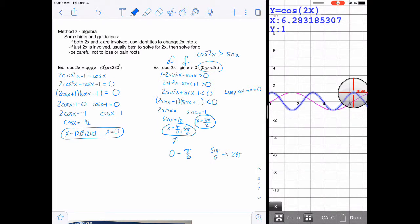So from 5 pi over 6 all the way up to 2 pi, then the cosine is greater. So the way that we should write that is to sandwich x in between the 0 and the pi over 6, and then sandwich our x in between 5 pi over 6 to the end. It does include the 2 pi. So this is the final answer that we're looking for because that is where the cosine of 2x is greater than the sine of x.